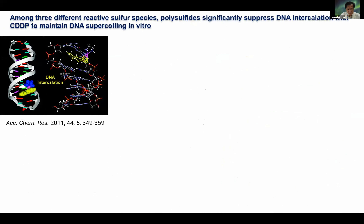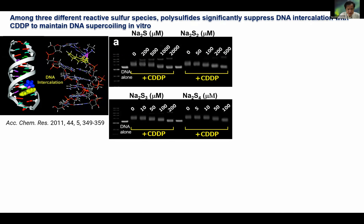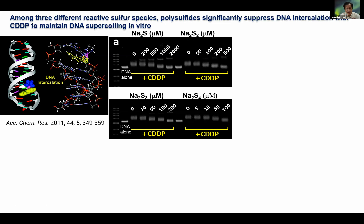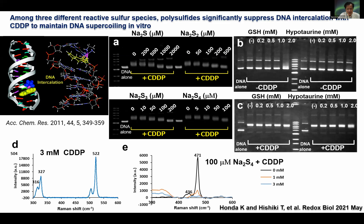The reason why polysulfide causes chemo-resistance is the following. Cisplatin is an intercalating reagent that binds to the DNA strand. However, in the presence of polysulfide species such as Na2S2, S3, or S4, these reagents change the chemical structure of cisplatin and interfere with DNA intercalation. That means the interaction between cisplatin and DNA is cancelled, which may be one of the mechanisms by which polysulfide causes chemo-resistance.